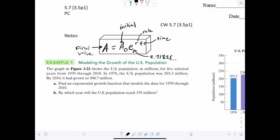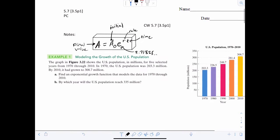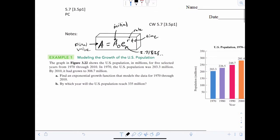So let's look at the first question. The graph shows the US population in millions for five selected years from 1970 through 2010. In 1970, the US population was 203.3. By 2010, it had grown to 308.7. Part A, find an exponential growth function that models the data. So immediately we have a couple values here. For A, I know that my initial was 203.3 million people and I ended at 308.7 million people.